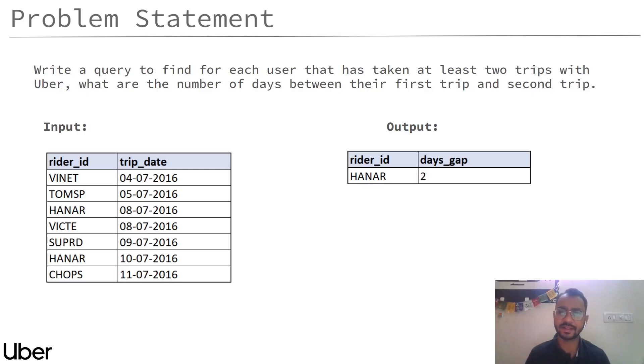The input table here will have two columns: your rider ID and your trip date. If I have to solve this example here, we can see there is a rider called Hanar.